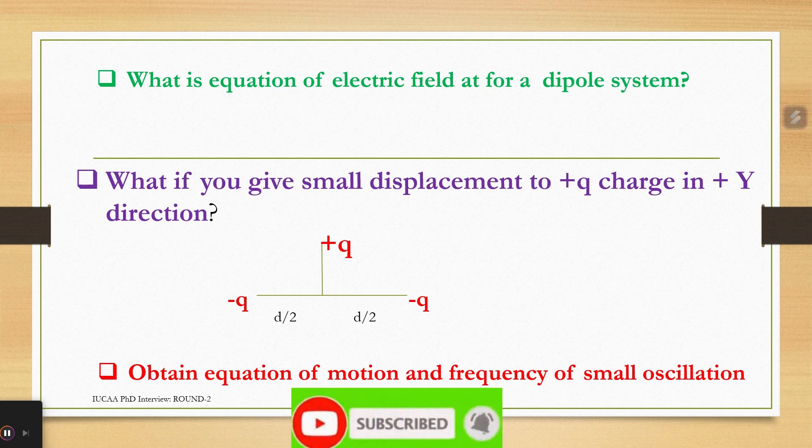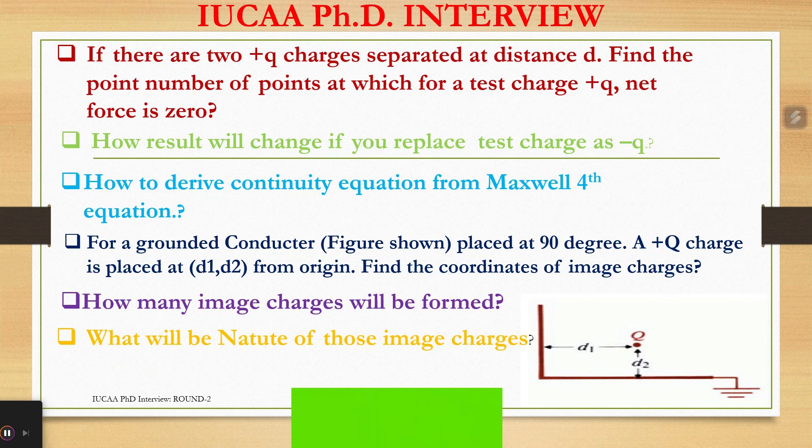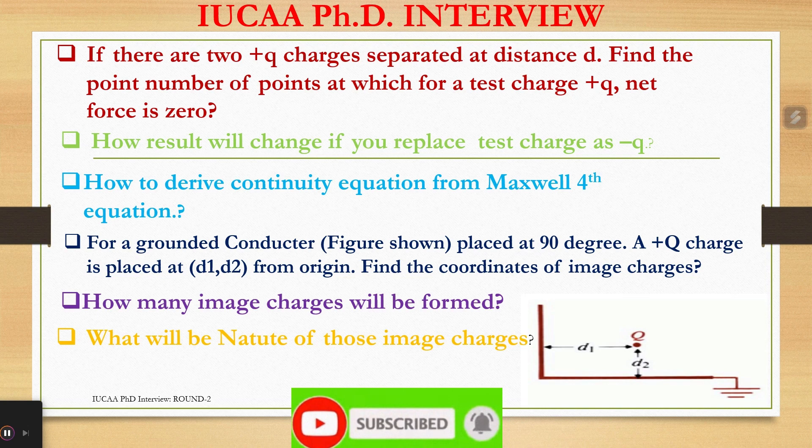If there are two plus Q charges separated at distance d, find the number of points at which for a test charge plus Q, net force is zero. How will the result change if you replace test charge as minus Q? How to derive continuity equation from Maxwell's 4th equation?